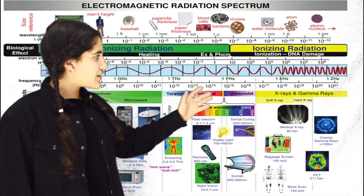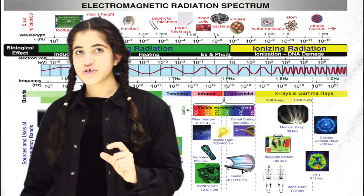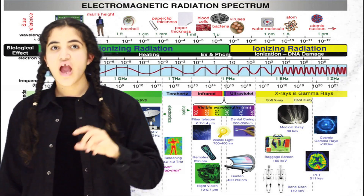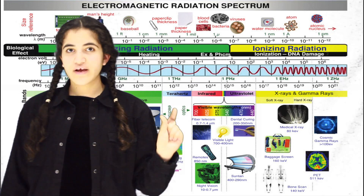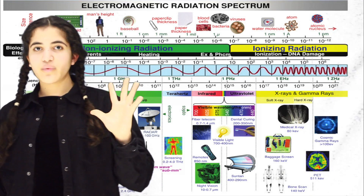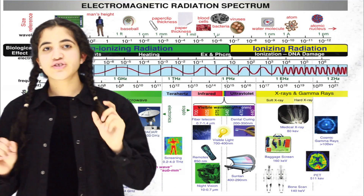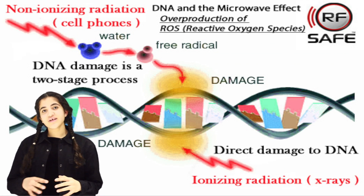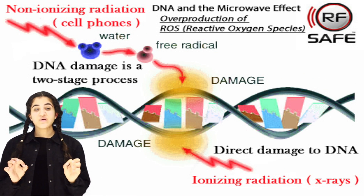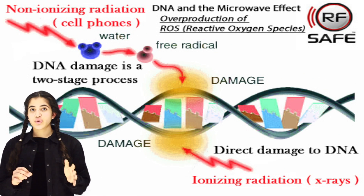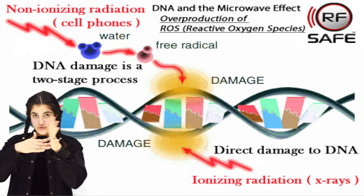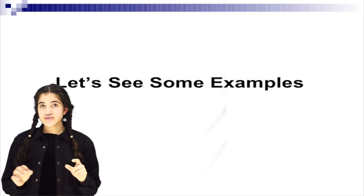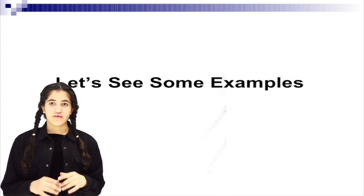As we see in the electromagnetic spectrum, they are put in order from the non-ionizing to the ionizing, and from low frequency with long wavelength to high frequency with short wavelength. So what does ionizing mean? It means that it has the ability to break a bond between molecules. So let's see what are the different uses of electromagnetic waves.